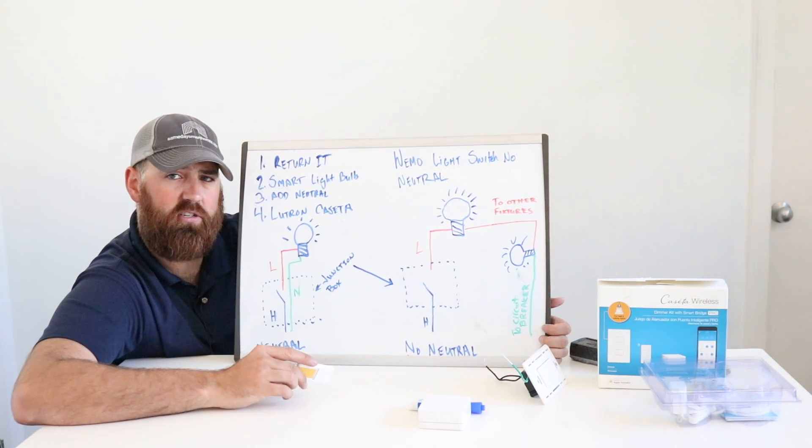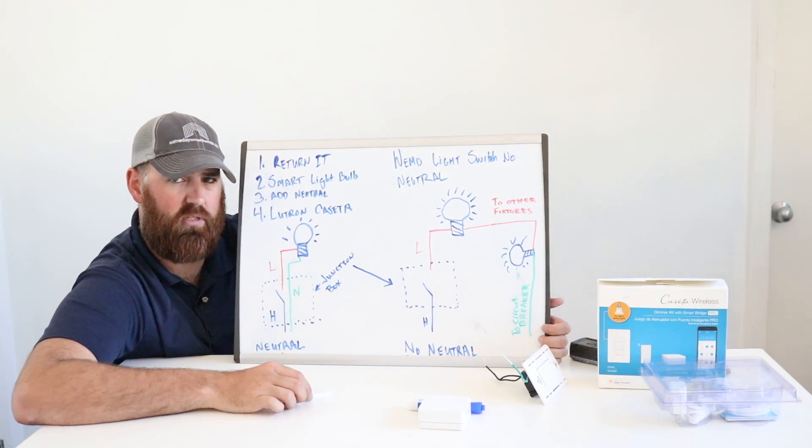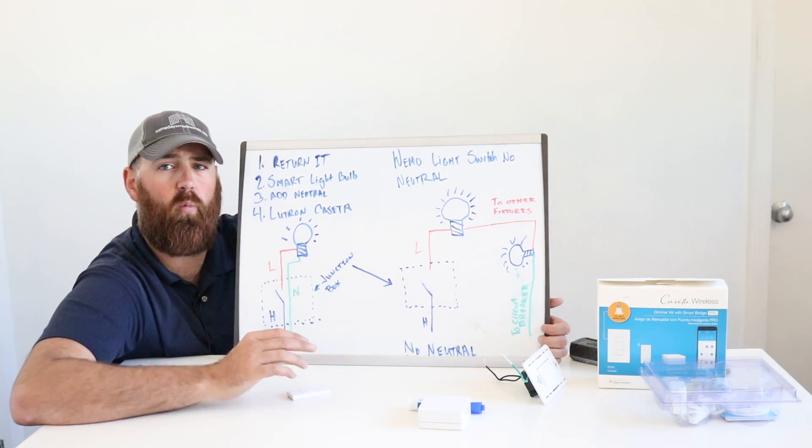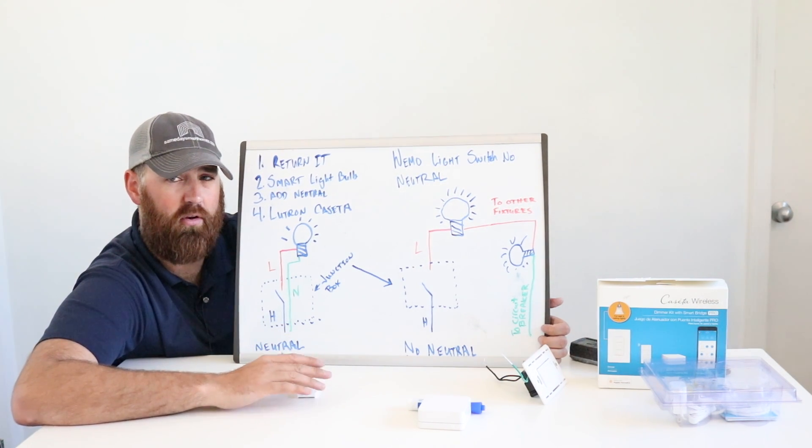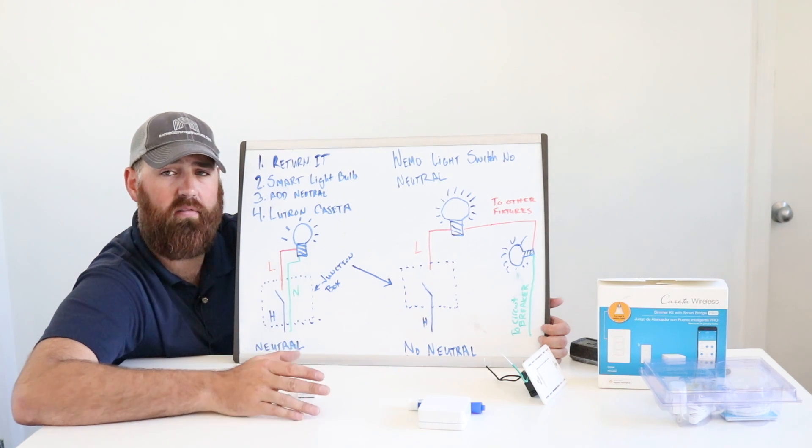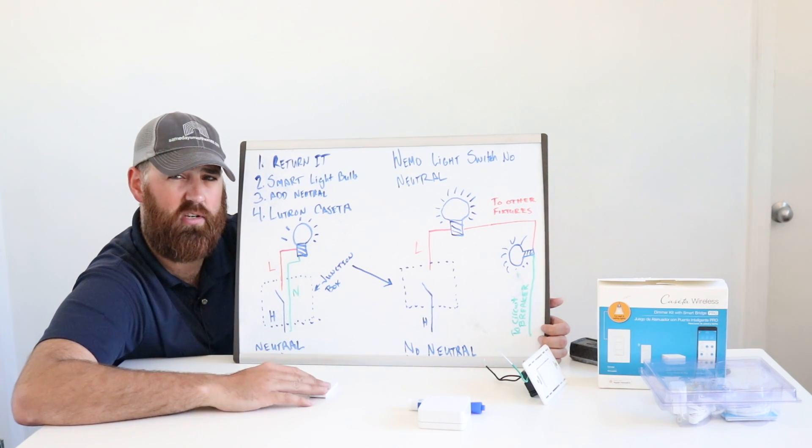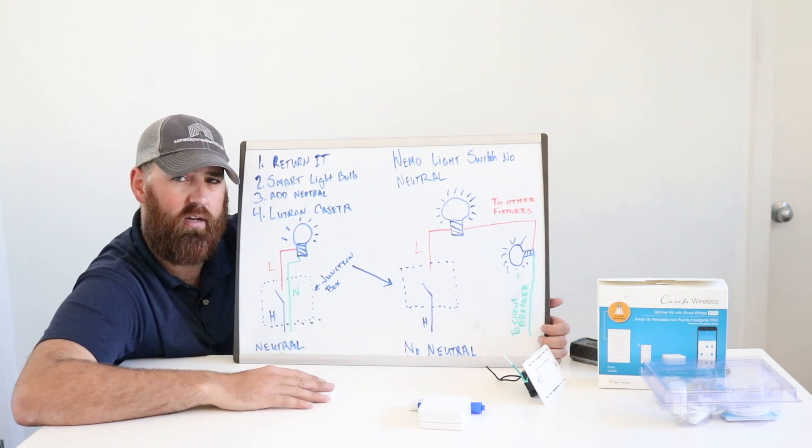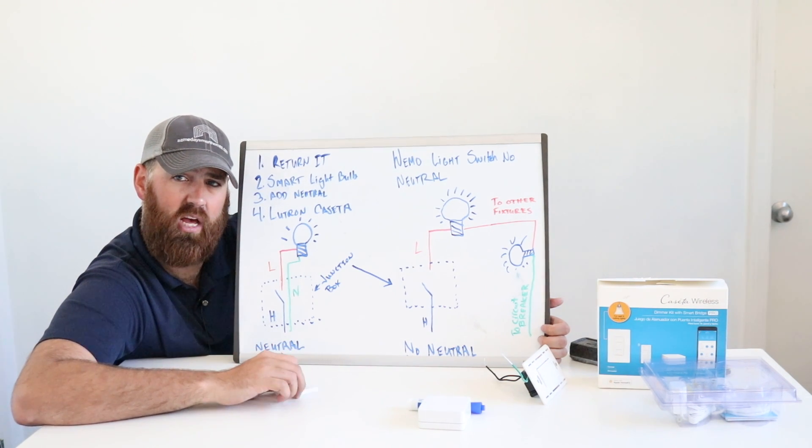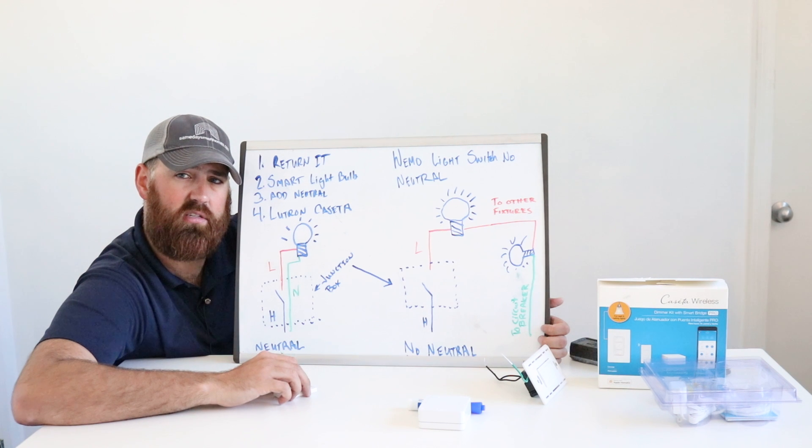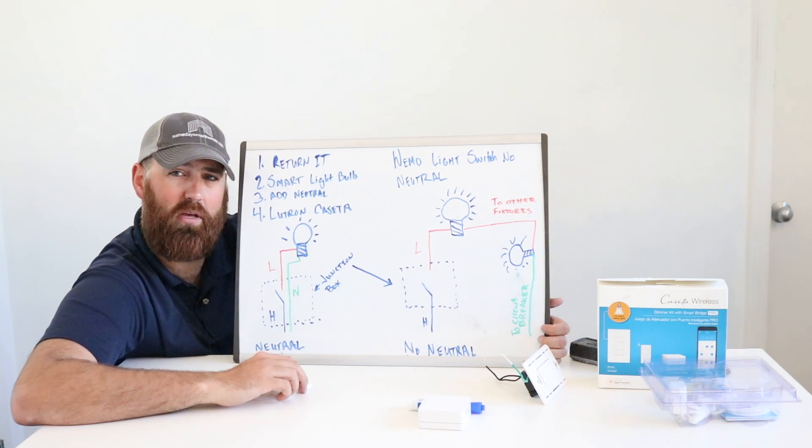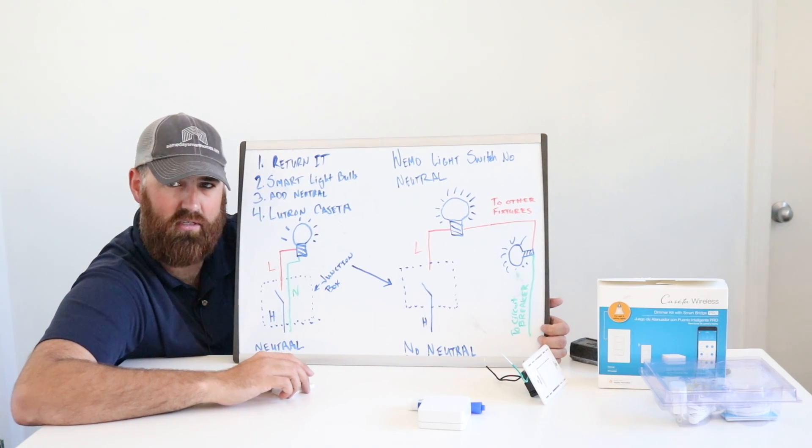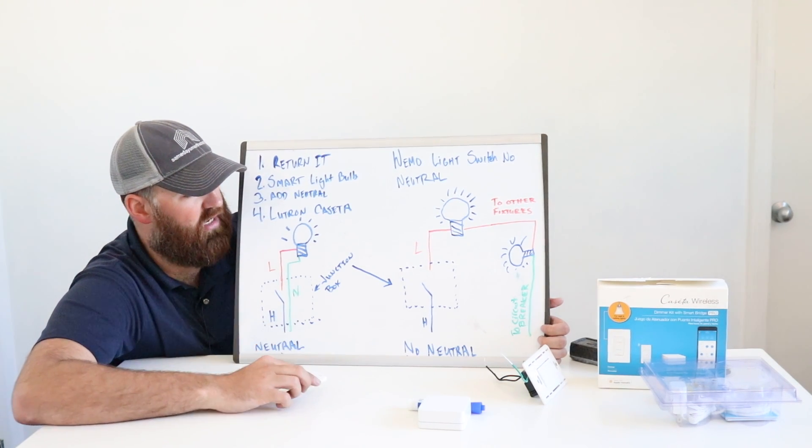But the only disadvantage to that is that the Philips Hue system requires that you have a working Wi-Fi network. So you're trying to go to sleep and the Wi-Fi goes out. And now all of a sudden you cannot control your smart light bulbs, which could be a pain for some of you trying to go to sleep. So that's one downside to that.